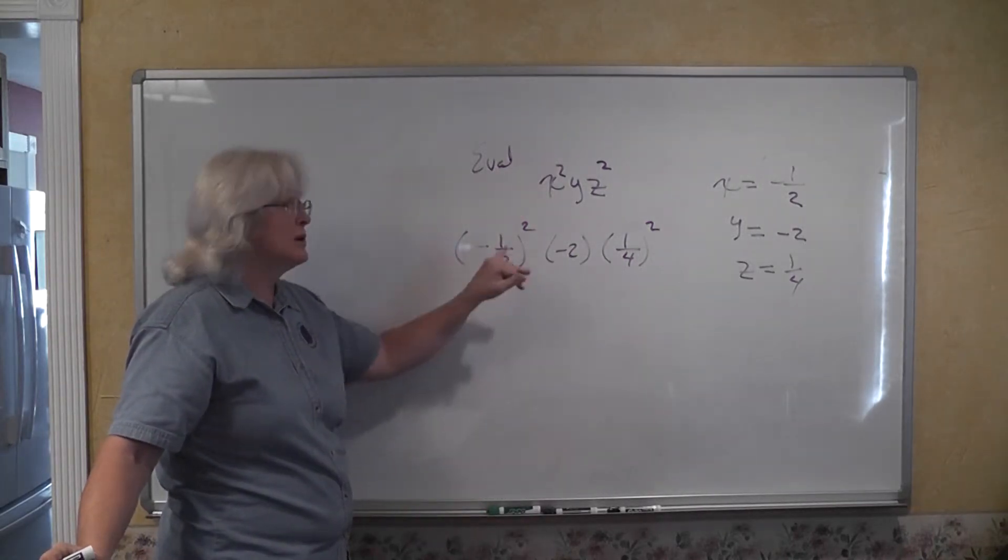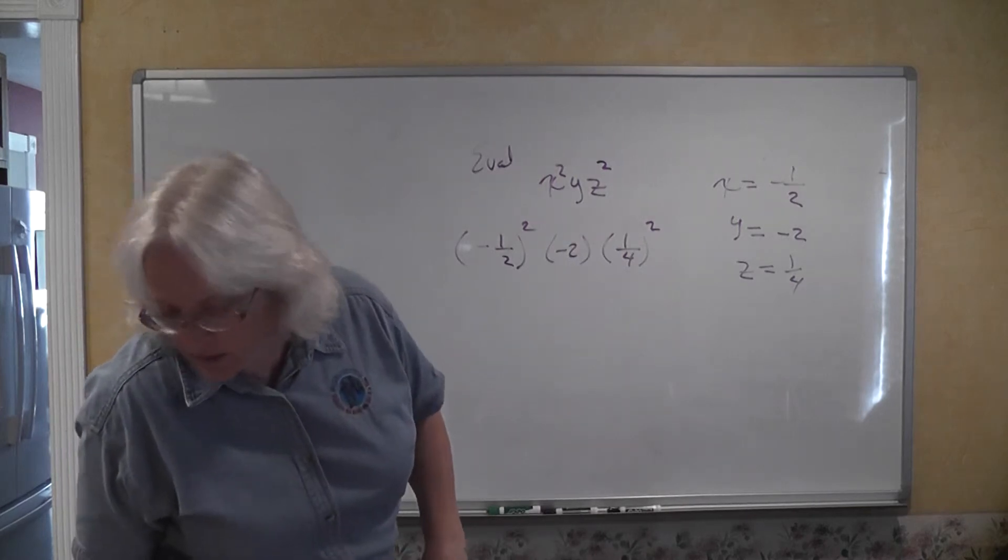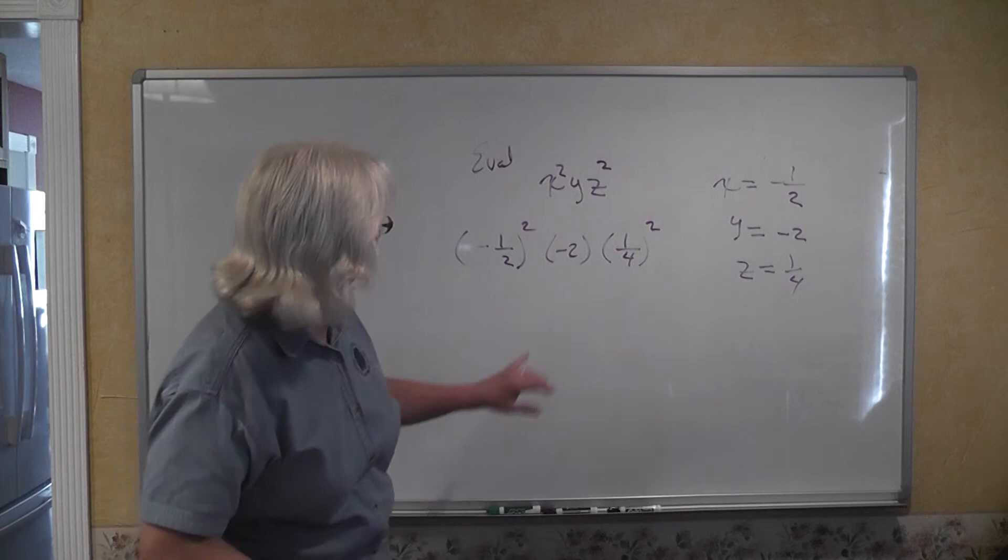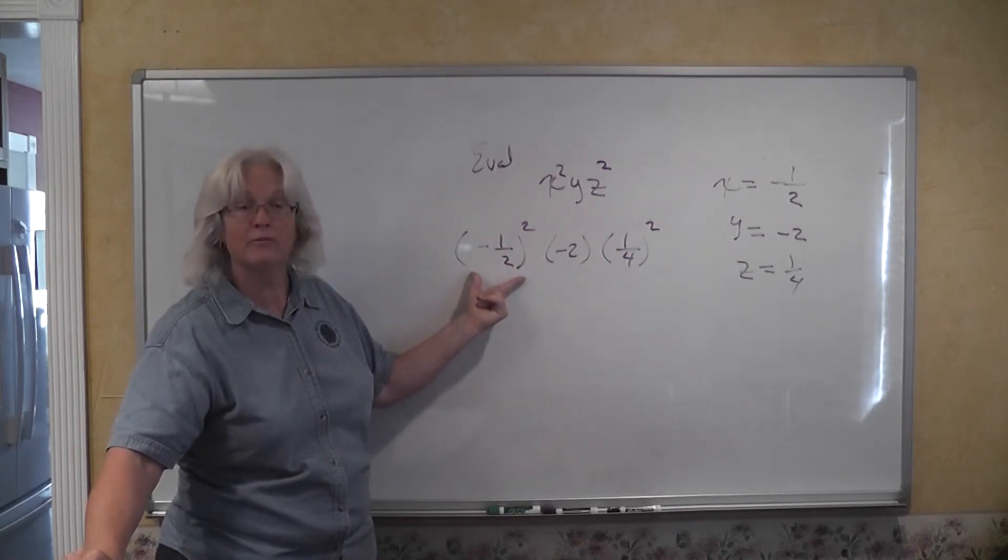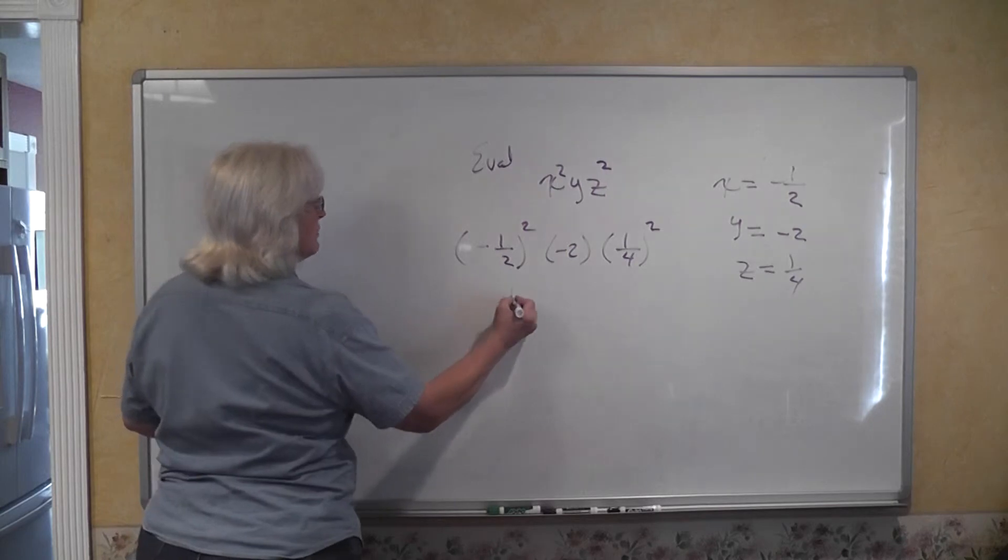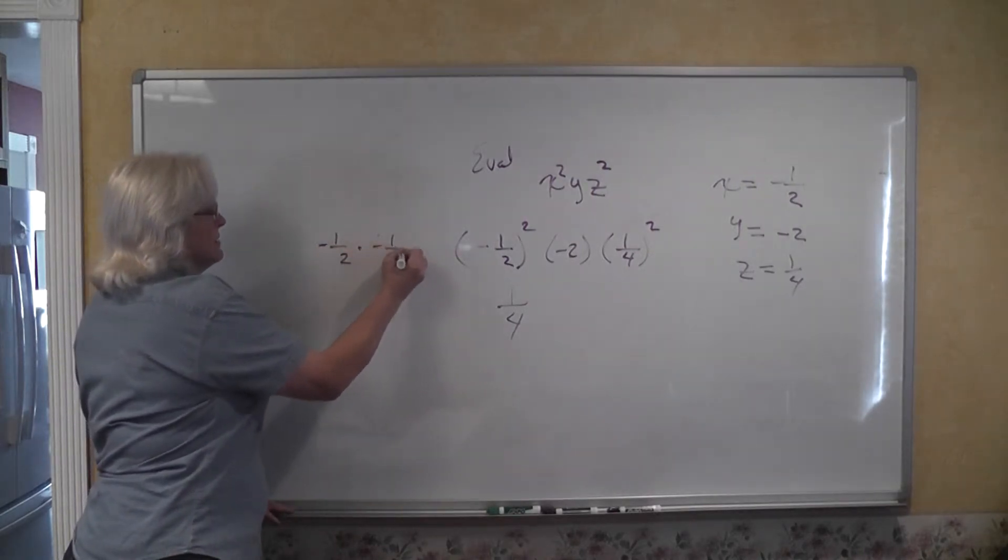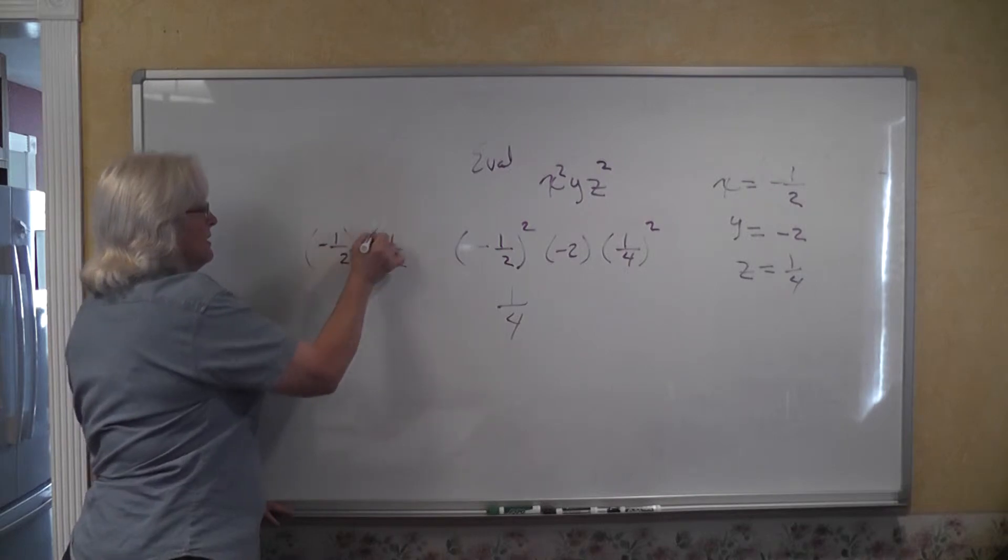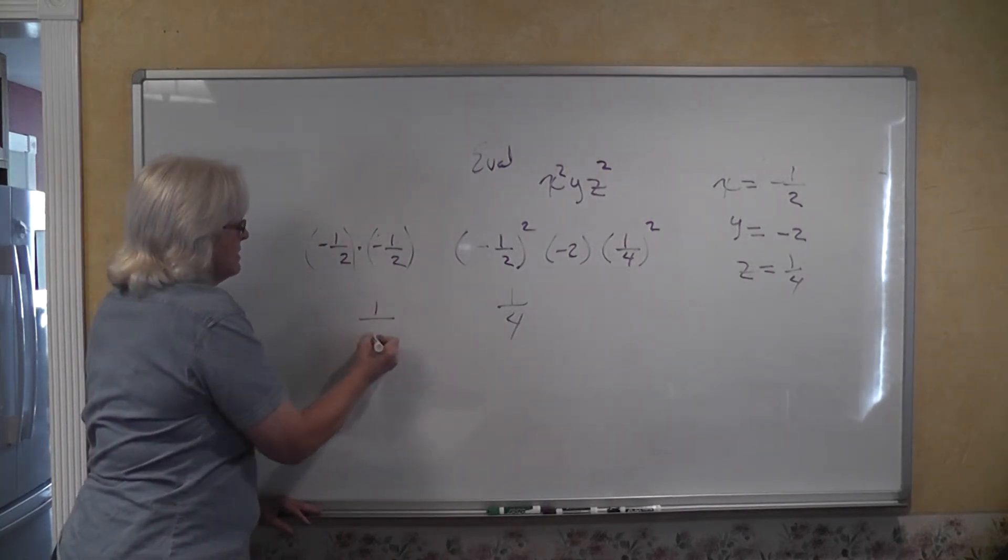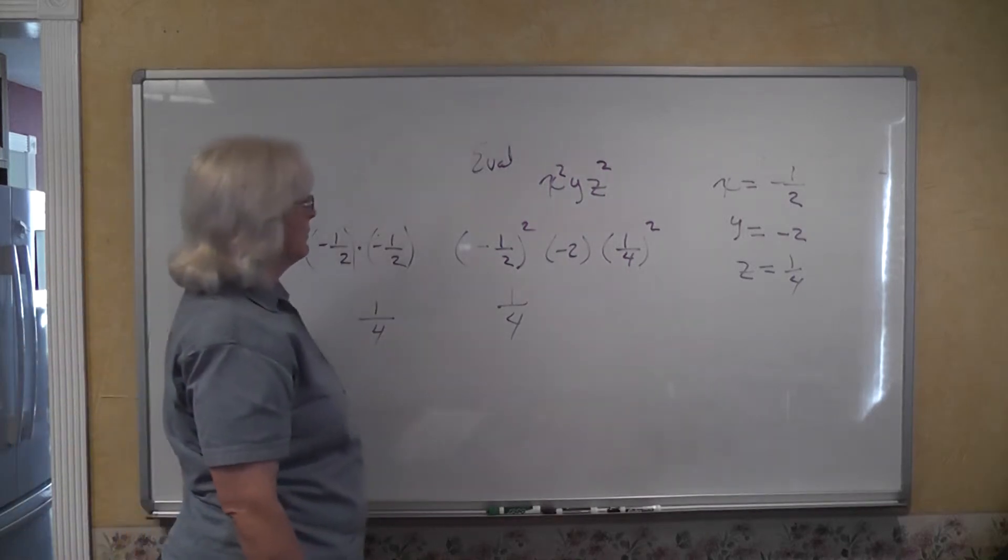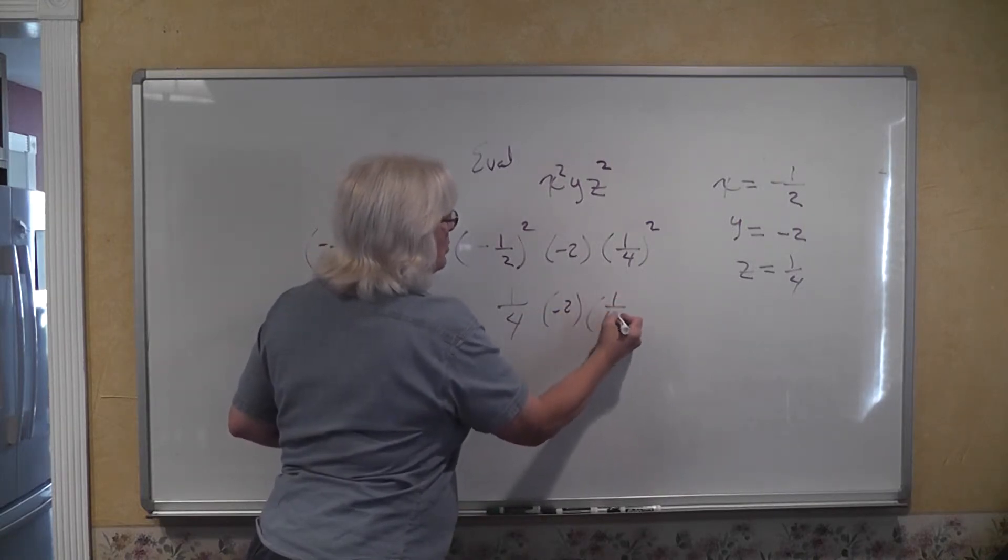Negative 1 half squared is going to give us, let me write it out here for you. Negative 1 half times negative 1 half. Negative times a negative is always positive. When you're multiplying fractions, you multiply the numerators together, you multiply the denominators together, and that's how we ended up with 1 fourth. So we have 1 fourth times a negative 2 times 1 sixteenth.